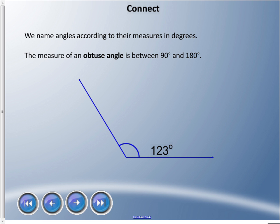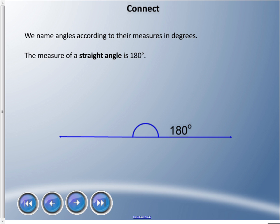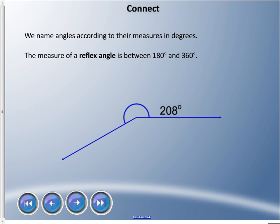The measure of an obtuse angle is between 90 and 180 degrees, so anywhere between the right angle and this way is an obtuse angle. A straight angle is simply 180 degrees. The measure of a reflex angle is between 180 and 360 degrees. Remember the 180 is that straight angle that comes out here, so somewhere between these areas is a reflex angle.